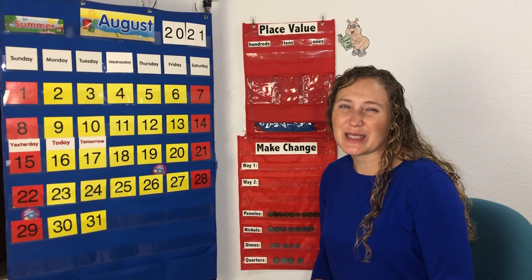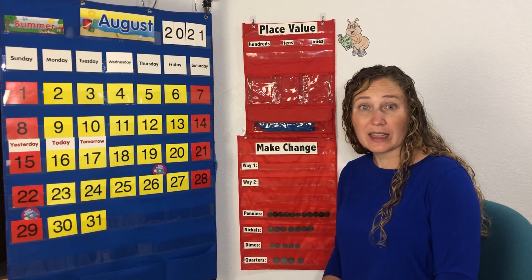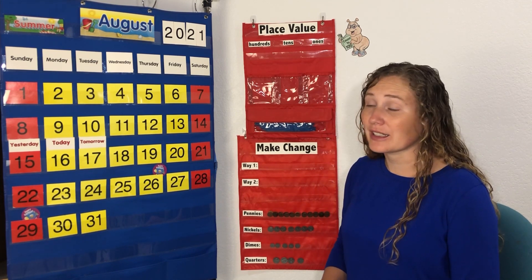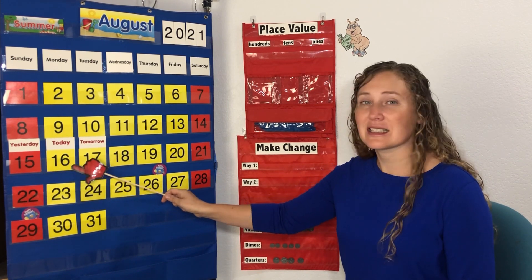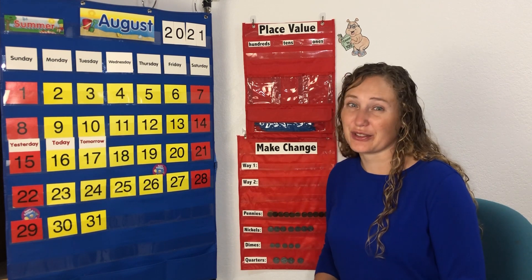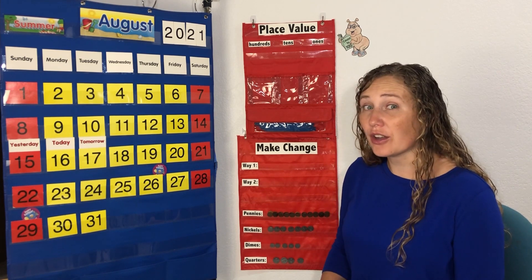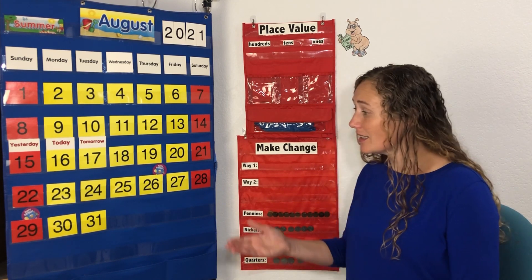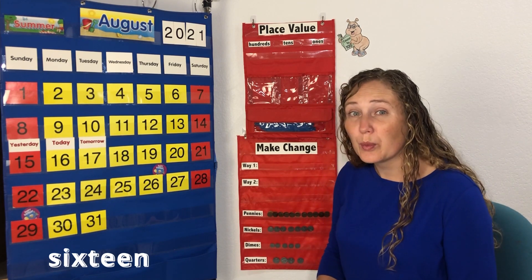Our number today is the number 16. Did you know that we can write the number 16 in different ways? The way it's written on our calendar, a 1 and a 6 — that's called standard form. That's the normal way that you see 16. We can also write 16 in word form, which means to spell it out with letters.